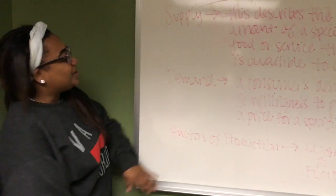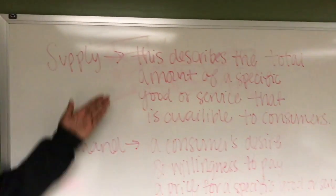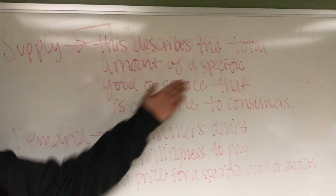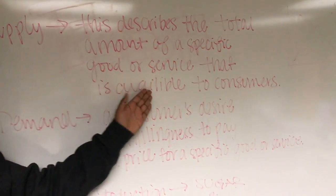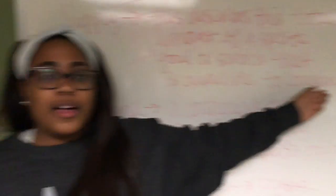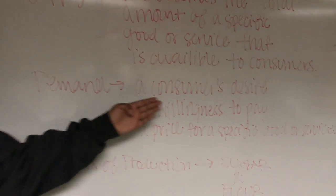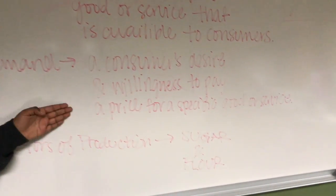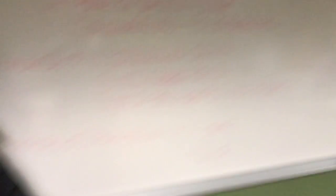Awesome. So here on our whiteboard, we have it quite simple. Supply — this describes the total amount of a specific good or service that is available to consumers. And what about demand? Well, demand is a consumer's desire and willingness to pay a price for a specific good or service.